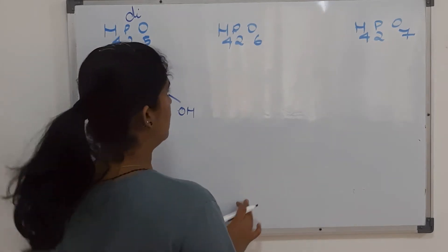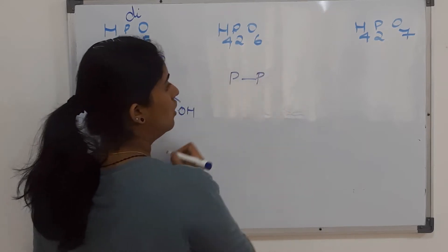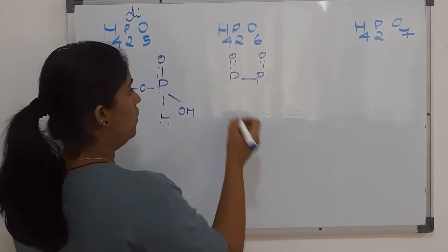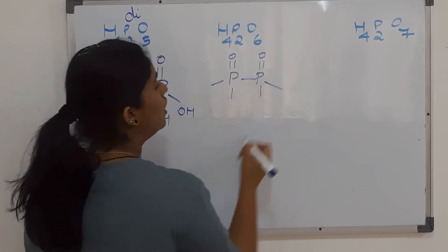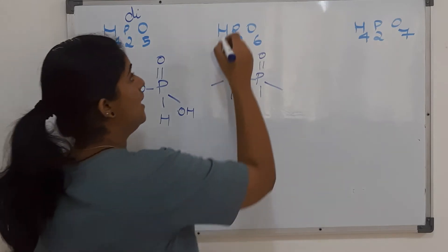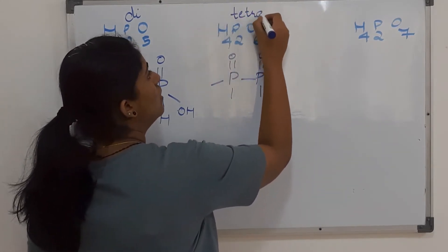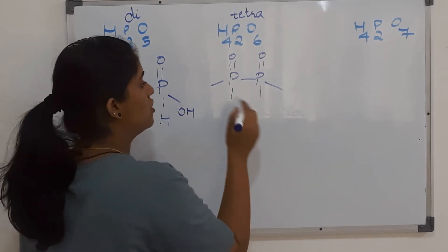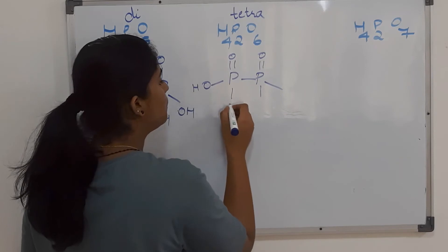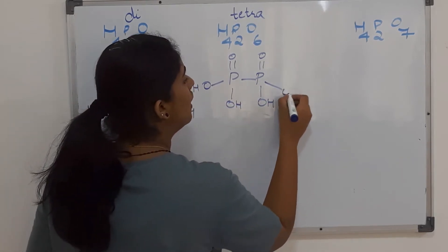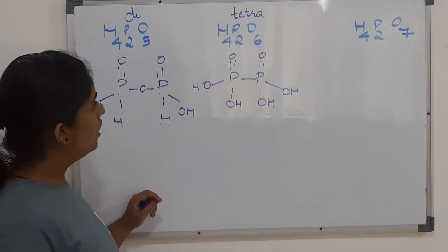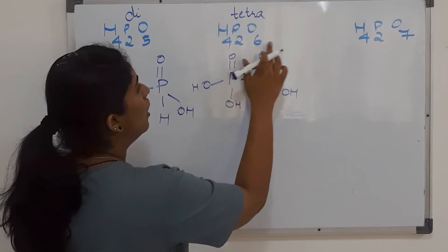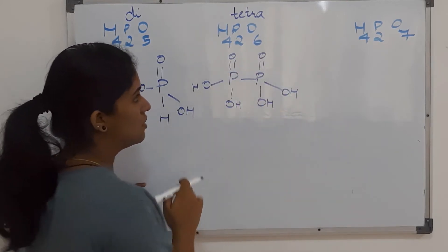Moving on to H₄P₂O₆: we have two phosphorus atoms bonded together, each with a P=O unit and a total of five bonds around each phosphorus. This structure is tetrabasic, so there are four OH units — two going to the first phosphorus and two to the second, giving OH, OH on each side. All four hydrogens, two phosphorus atoms, and all six oxygens are accounted for in this structure.